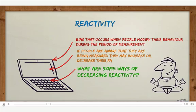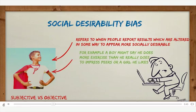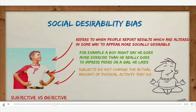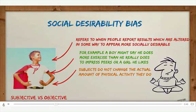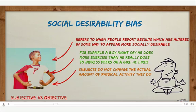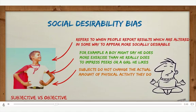Social desirability bias refers to when people report results which are altered in some way to appear more socially desirable. For example, if given a survey, a boy might say he does more exercise than he really does to impress his peers or to be more socially accepted. They do not actually change the amount of physical activity they do like in reactivity — they basically just lie about it.